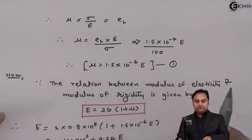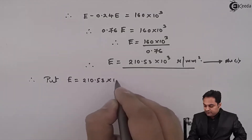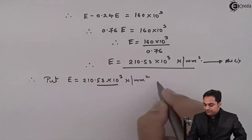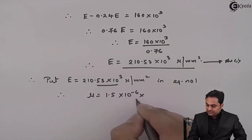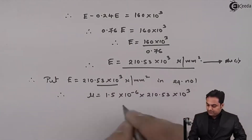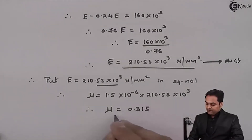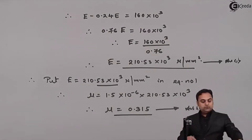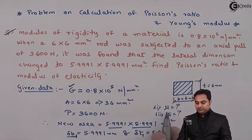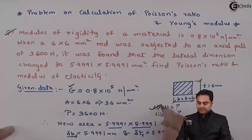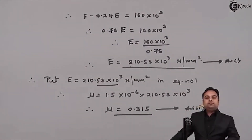Now I will put this value of capital E equal to 210.53 into 10 raised to 3 Newton per mm square into equation number 1. So mu equals 1.5 into 10 raised to minus 6 into 210.53 into 10 raised to 3. Multiplying all terms, I get mu as 0.315. So Poisson's ratio is 0.315 and Young's modulus is 210.53 into 10 raised to 3 Newton per mm square. With these two values, the problem is completed.